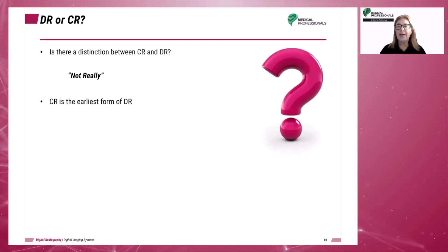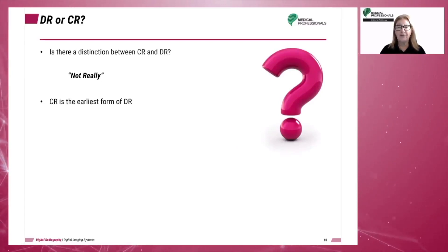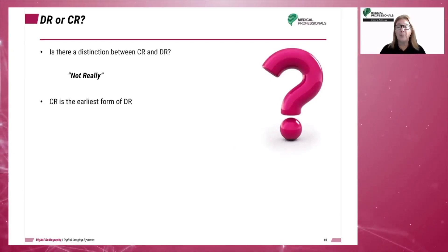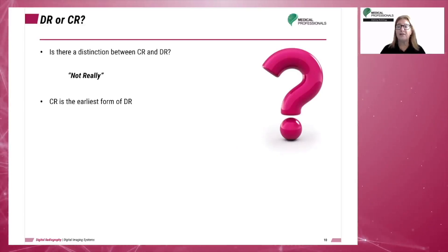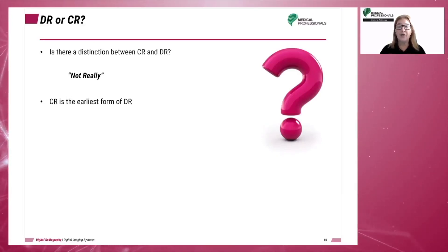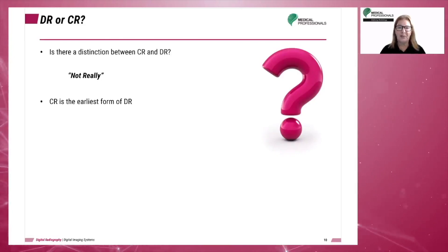In this series, we will refer to both computed radiography, CR, and digital radiography, DR, as digital imaging. Both are digital imaging processes, with the only distinction being the image receptor that is used. CR is the earliest form of digital imaging.